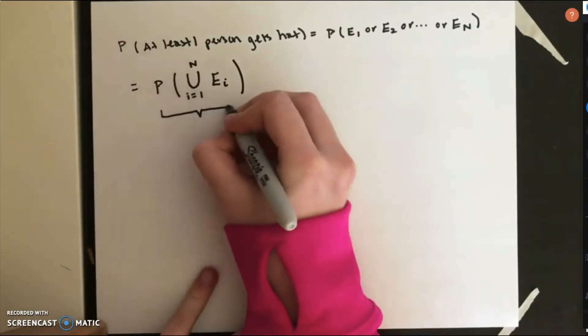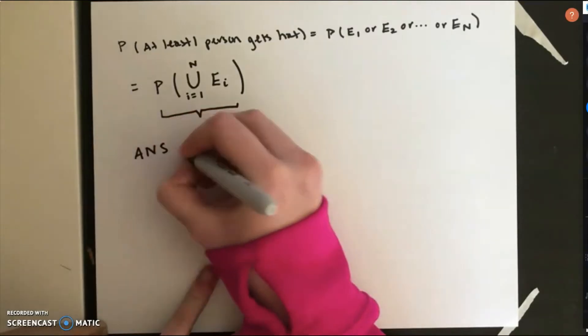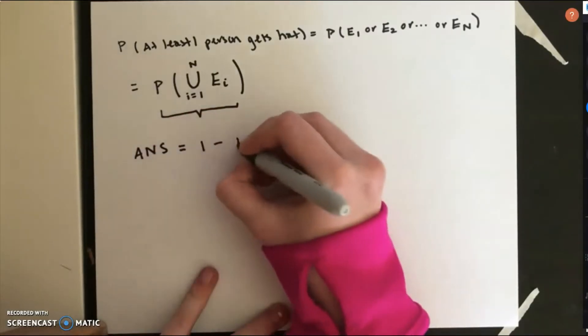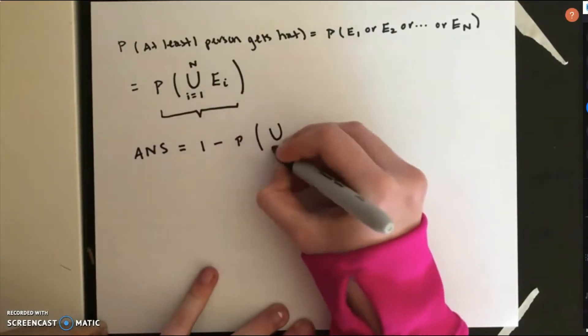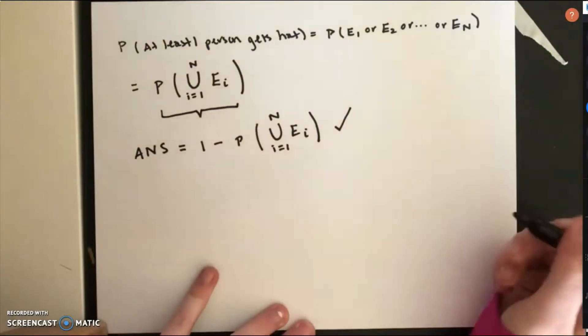Our final answer will be 1 minus this probability, because the question asks for the probability that nobody gets their own hat.